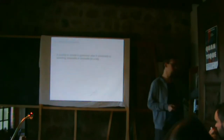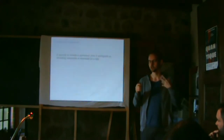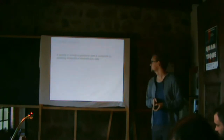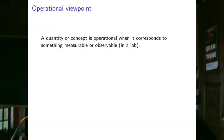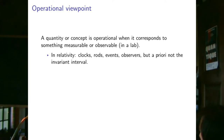The idea of most modern reconstructions of quantum theory is to do it from a fully operational vantage point — referring only to quantities that are operational, meaning they correspond to something you can actually observe in a lab. In relativity, operational things are clocks, measuring rods, events, and observers, but not a priori the invariant interval. Entropy is abstract, but once you can calculate it for a channel, it becomes operational.